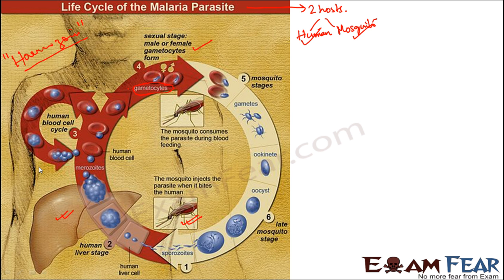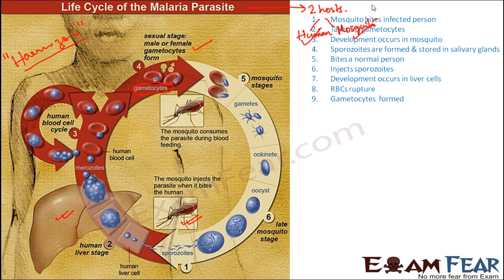It is not just any mosquito that can help in this transmission — it is done only by this specific mosquito. To review: the mosquito bites an infected person and takes up the gametocytes. Development of the gametocyte then takes place inside the mosquito — formation of gametes, fusion of gametes, formation of the oocyst, and release of spores. Sporozoids are formed and stored in the salivary glands of the mosquito, which then bites a normal person, injecting the sporozoids.